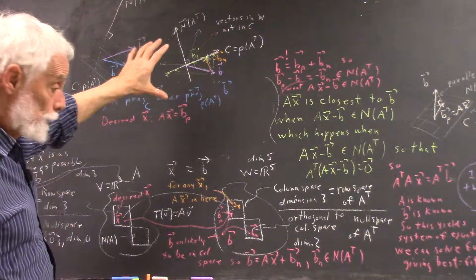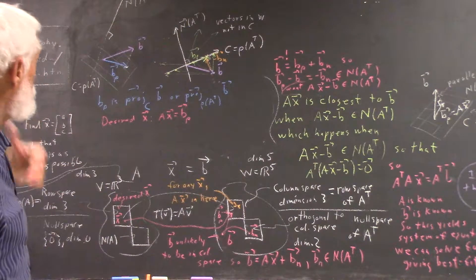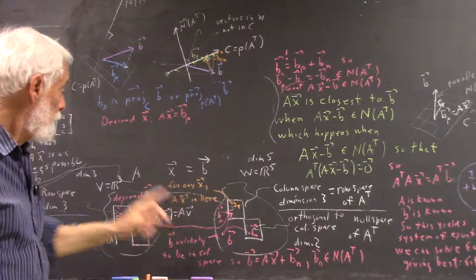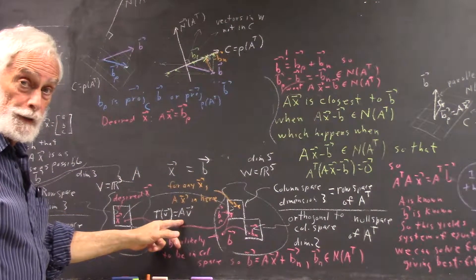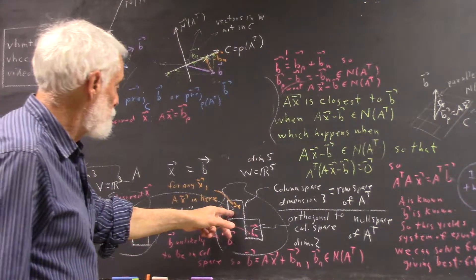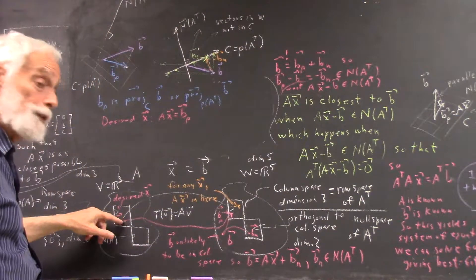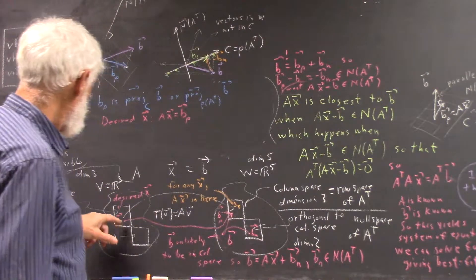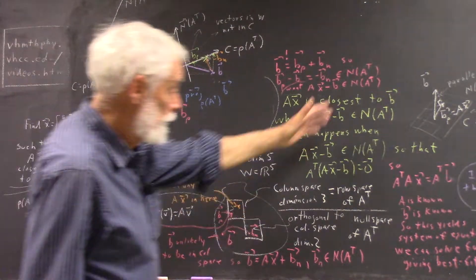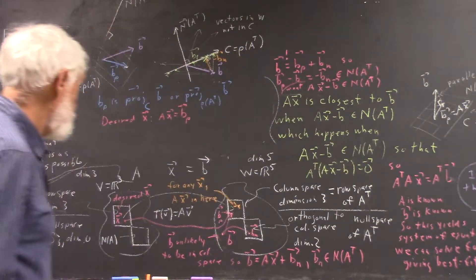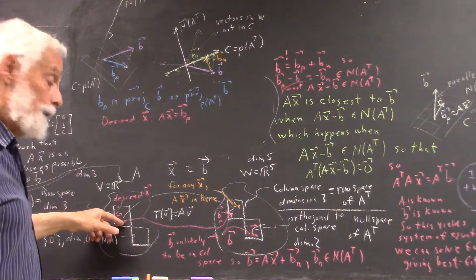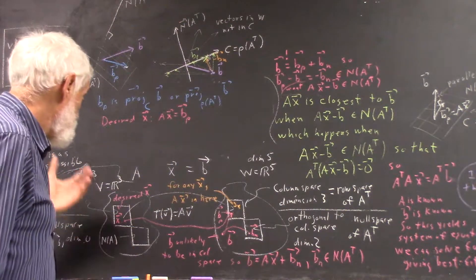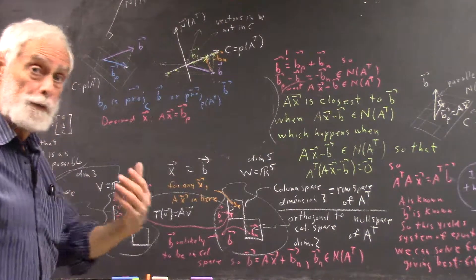All this is just to reinforce the idea that what we're doing is we're projecting the B vector into the column space of a transformation defined by the matrix A. And that gives us the vector to which our best fit solution would be mapped. And the X vector that we get over here, which we get by this fairly simple process, constitutes the values of A, B, and C to give us the best possible quadratic fit to our data.